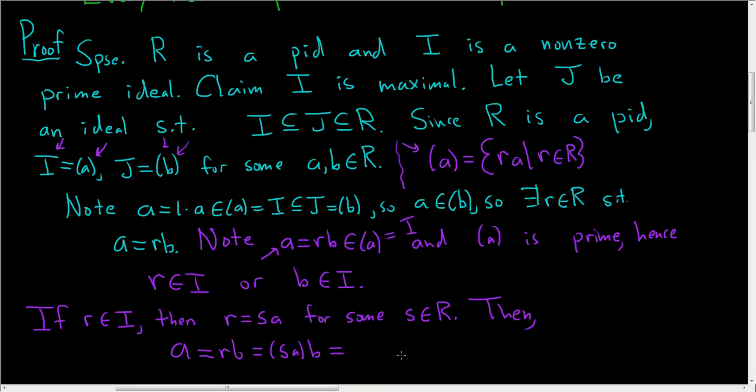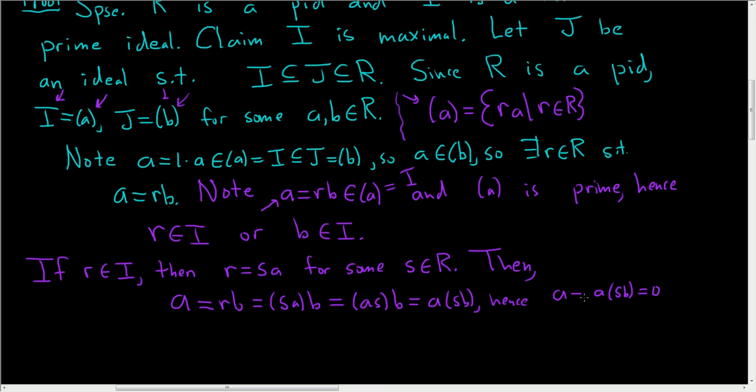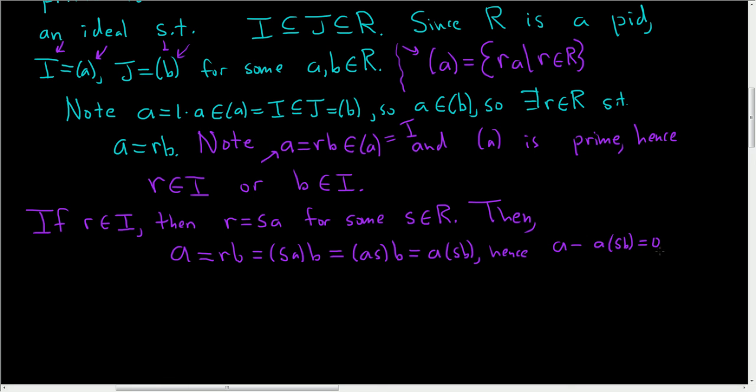And everything here is commutative. We're in a domain. So this is asb. The multiplication is associative, so we can write this as asb. Hence, a minus asb is equal to 0. Using the distributive property, or simply factoring out the a, we end up with a(1 - sb) is equal to 0.